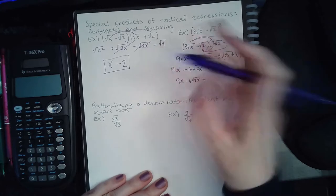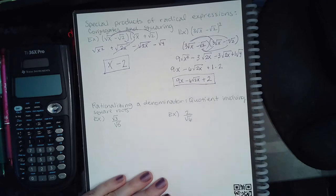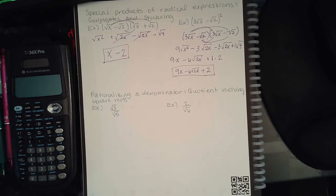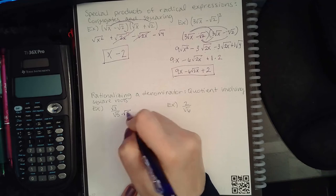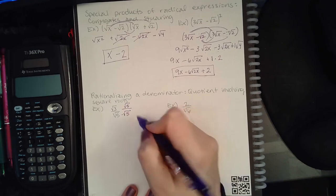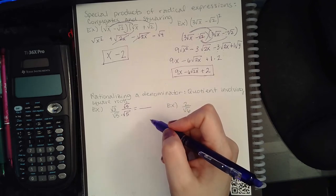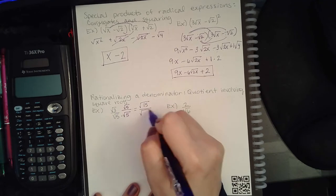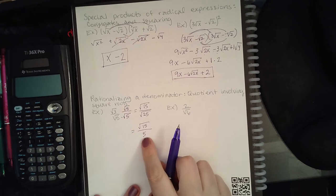None of these are like terms so that's the final response. Now for rationalizing a denominator: whatever is in the denominator, you multiply it to the top and the bottom. Here I have a square root of 5, so I multiply by square root of 5 on the bottom and square root of 5 on the top. That creates a perfect square in the bottom. Square root of 3 times square root of 5 is square root of 15; square root of 5 times square root of 5 is square root of 25.